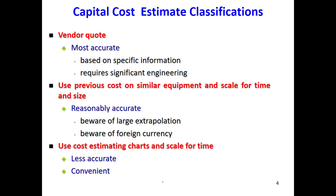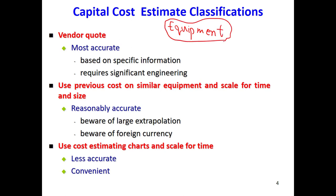For cost estimation, we can use different sources. Let's focus on the equipment in the plant — heat exchangers, heaters, reactors, distillation columns — and how we find their cost. We have different sources available.